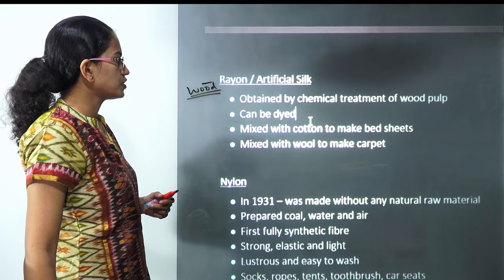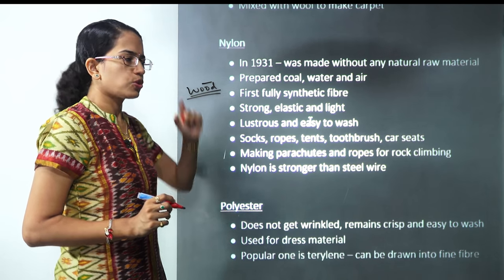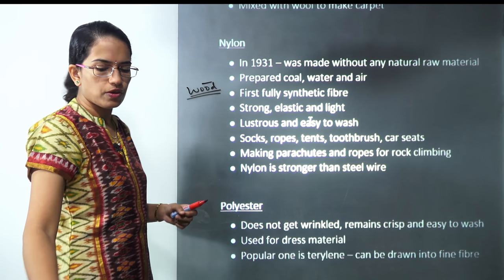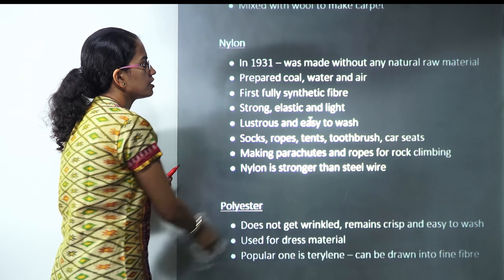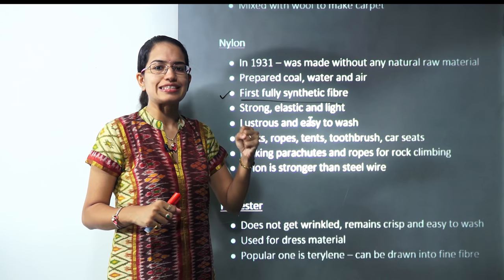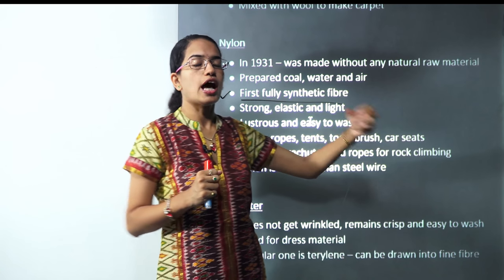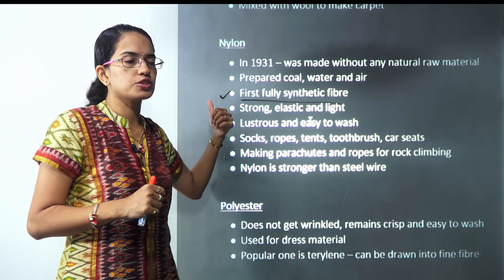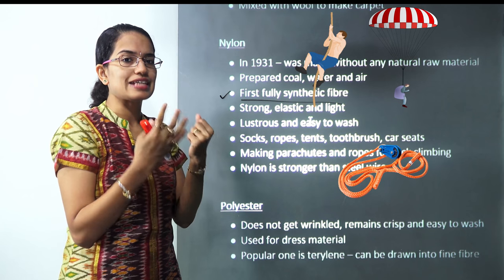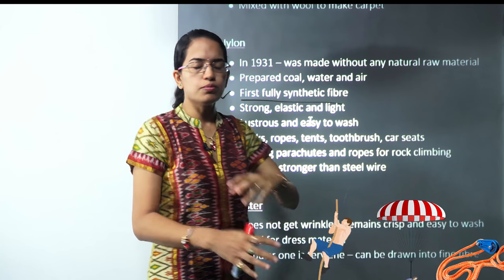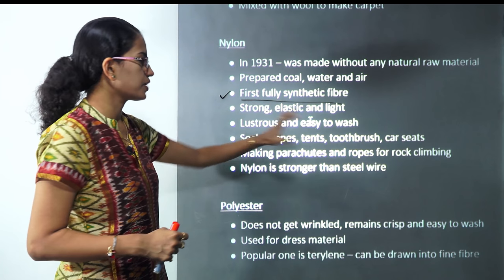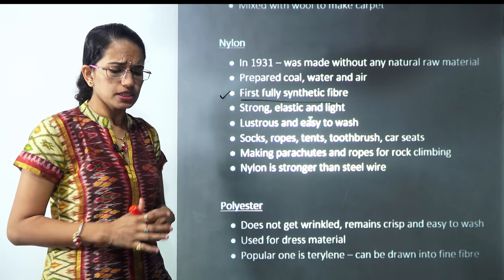The next is nylon. Nylon was first discovered in 1931 without any natural raw material — it was totally synthetic. Cold water and air were used to prepare it, making it the first fully synthetic fiber. It's strong, elastic, and lightweight. A thread of nylon has much more strength compared to iron. Therefore we use nylon in parachutes and rope making. It's lustrous and easy to wash. Day-to-day items made from nylon include socks, tents, toothbrushes, and car seats.